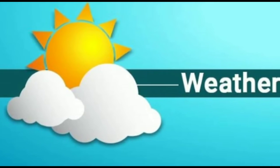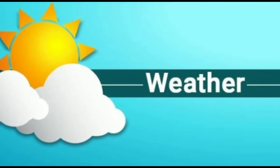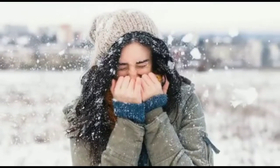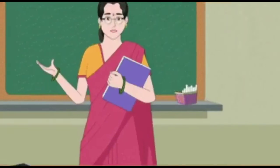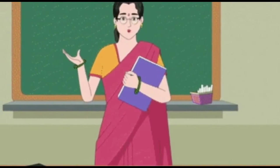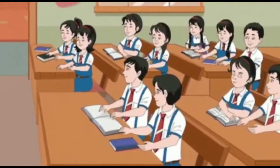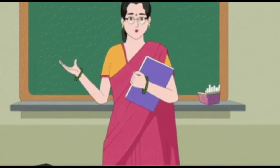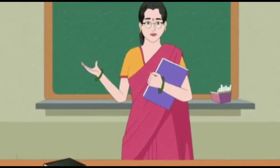The weather of a place may change from day to day, during the same day, or over a few days. The weather may be hot, cold, windy, cloudy, or rainy. These changes in weather are caused by the sun, wind, clouds, and rain. Now let's move on to seasons.